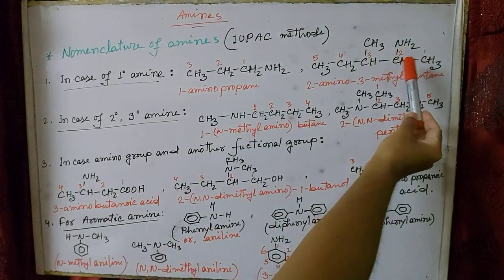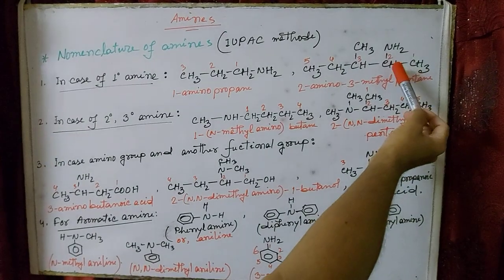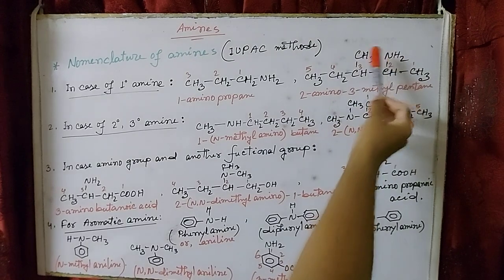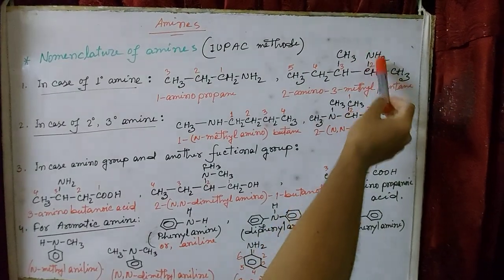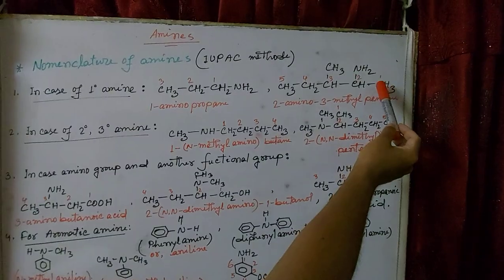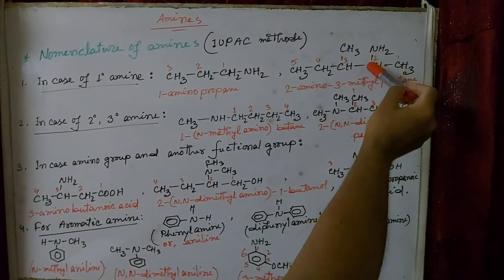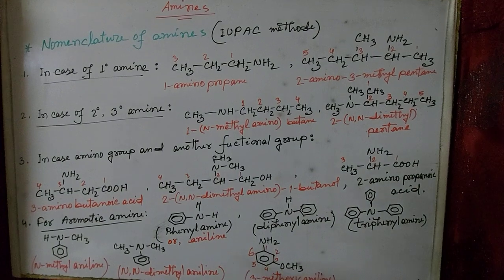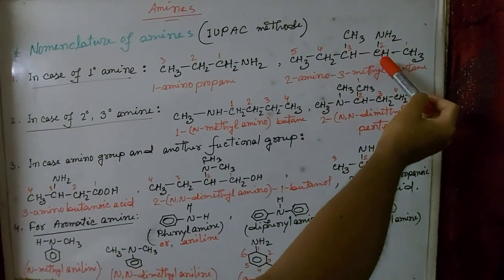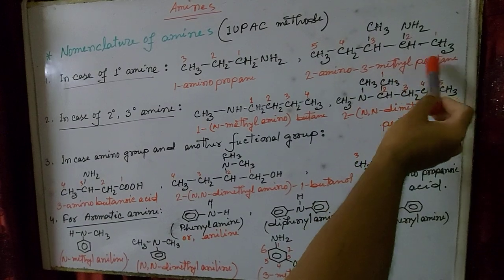If I start the numbering from the left side, the position of the amino group would be at carbon 4. But if I start from the right side, the amino group is at carbon 2, which gives a lower locant. I must give preference to the lower number. That is why the name of this compound is 2-amino-3-methylpentane.